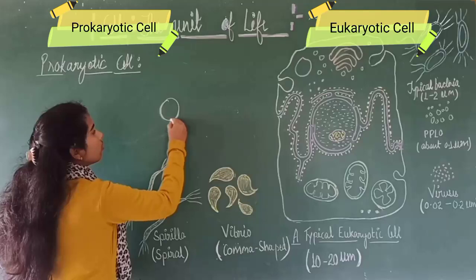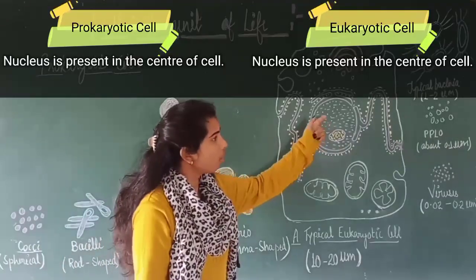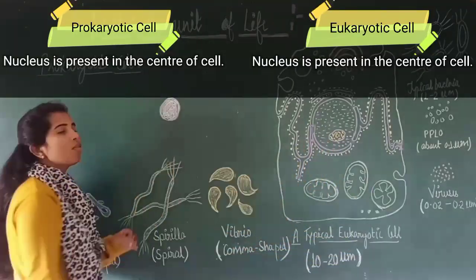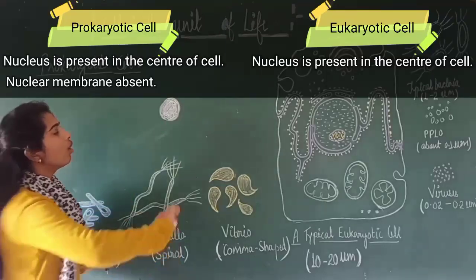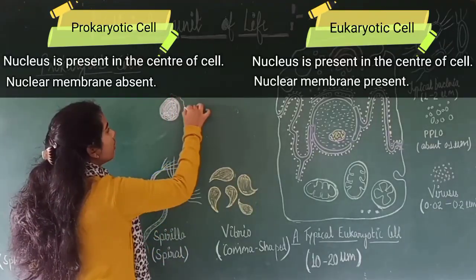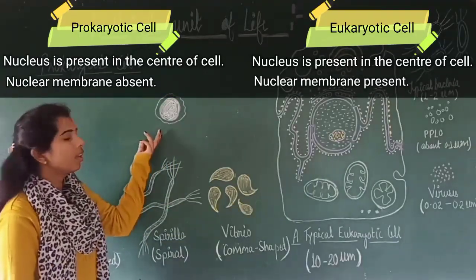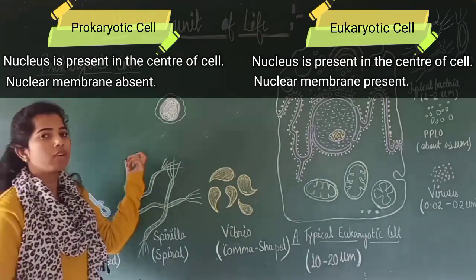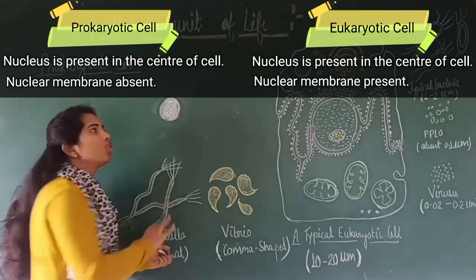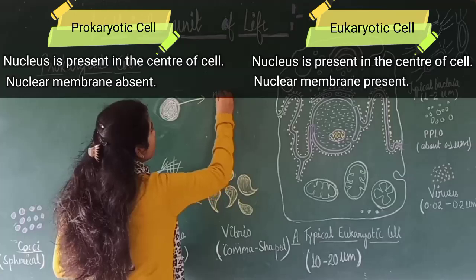In eukaryotic cells, the nucleus is spread in the center of the cell. This is the typical eukaryotic cell. In case of prokaryotic cells, the nucleus is not covered by any nuclear membrane, whereas in eukaryotic cells this nucleus is covered by the nuclear membrane. In prokaryotic cells, this nuclear membrane is absent and the genomic material or genetic material is free.